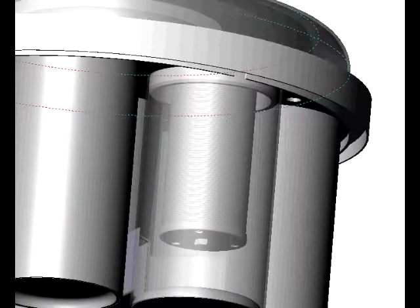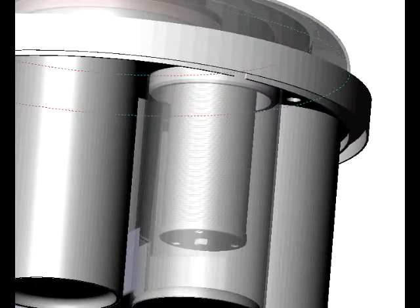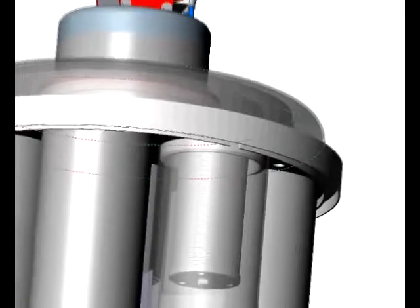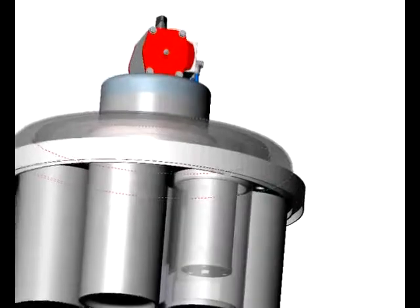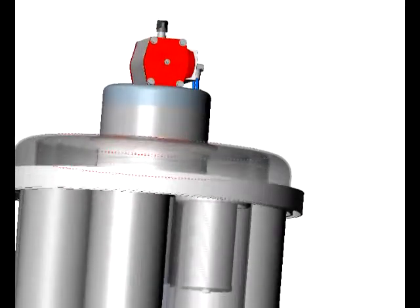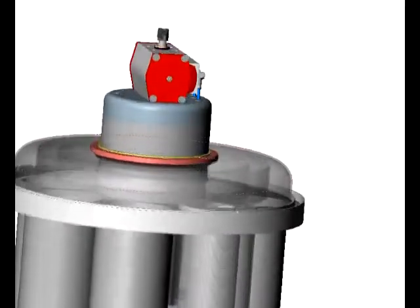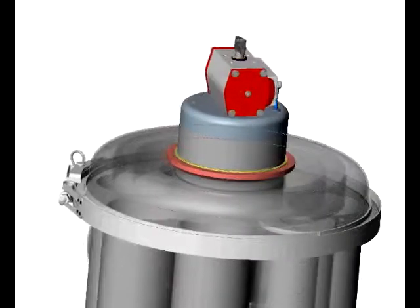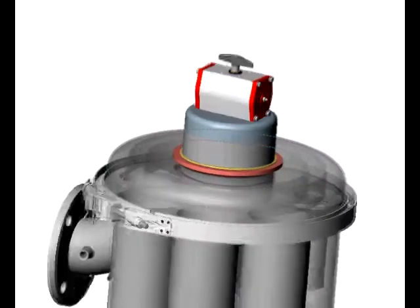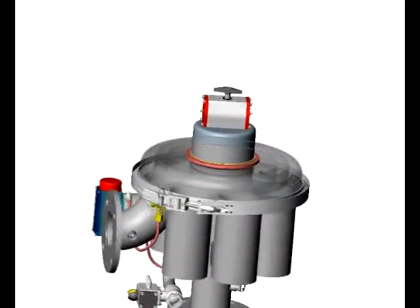Any debris which is larger than the micron rating of the element remains on the outside. The cleaned fluid now passes through the filter element and up into the donut cover where it joins with the flow from the other five elements. This common filtered fluid exits the filter via the discharge elbow and flange.